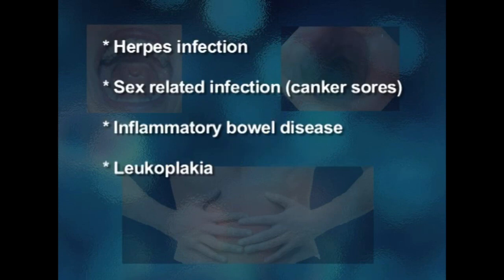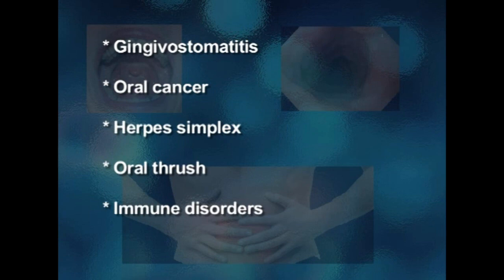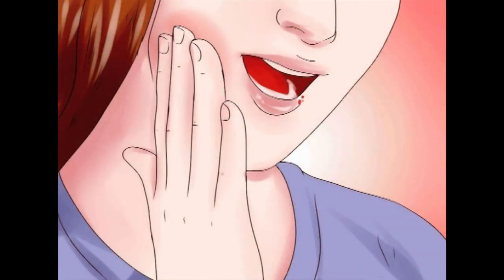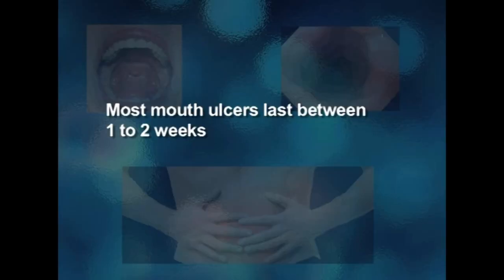Diseases related to mouth ulcers — some serious causes of mouth ulcers can be symptoms of herpes infection, sexually-related infection, canker sores, inflammatory bowel disease, leukoplakia, gingivostomatitis, oral cancer, herpes simplex, oral thrush, and immune disorders. If mouth ulcers are a symptom of a disease, they are usually accompanied by other symptoms in the body, but not always. Mouth ulcers last between one to two weeks.